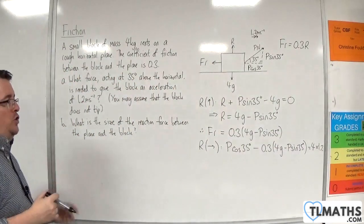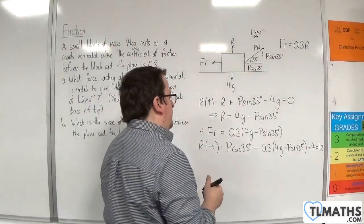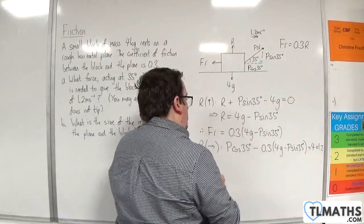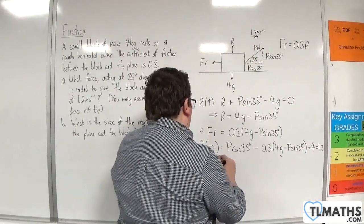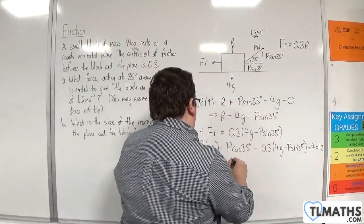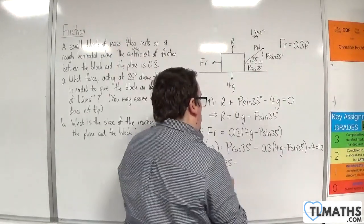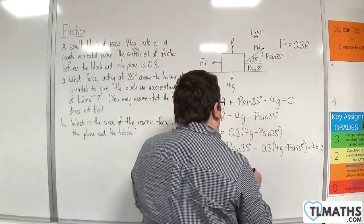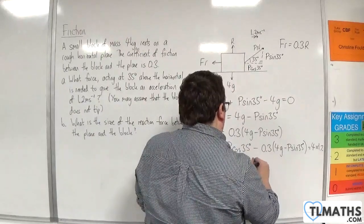So now I have an equation just involving P. So we have P cos 35 take away, so 0.3 times 4G will be 1.2G.